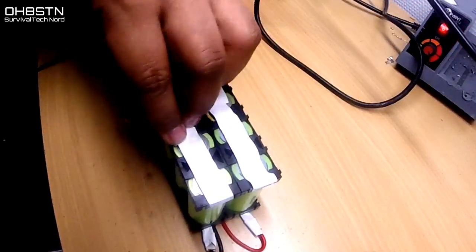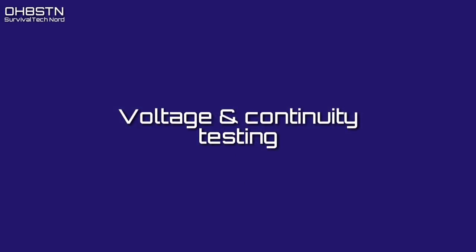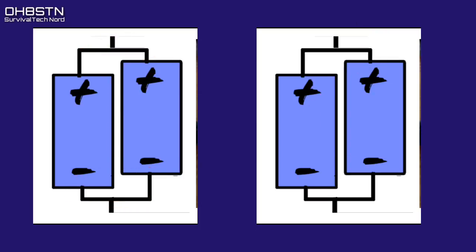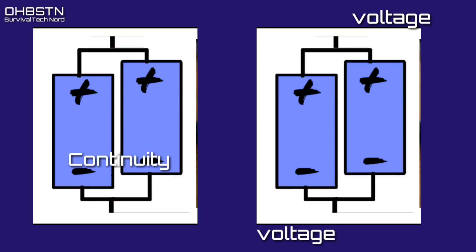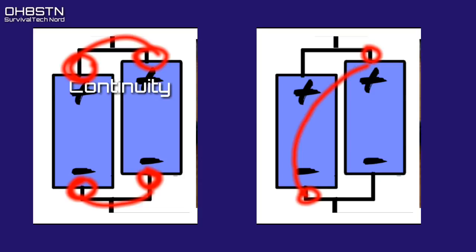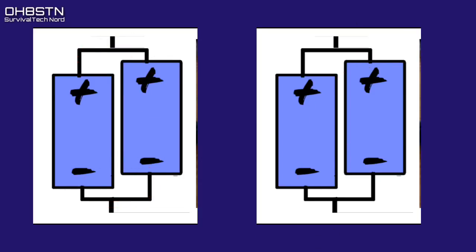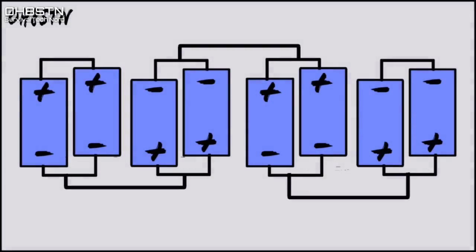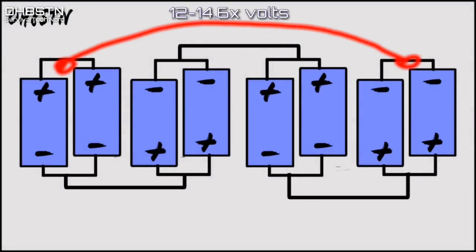For the next part of the test we're going to use our multimeter to test continuity and voltage around the pack. The first test is continuity between the positive terminals of each cell pair individually. Likewise, the next test is continuity between the negative terminals of each cell pair individually.